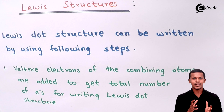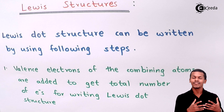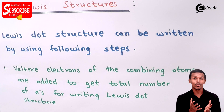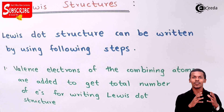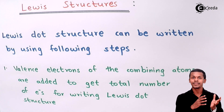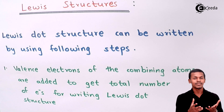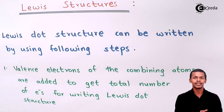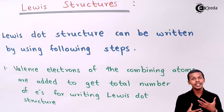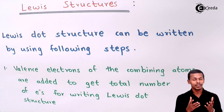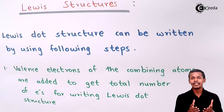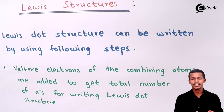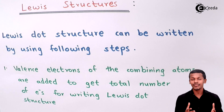Lewis structure is a representation of the atom's valence electrons. Whenever atoms form a molecule, we represent the total number of valence electrons of each particular atom, and that is how we get the overall electrons present in a molecule. Meanwhile, only some or sometimes all the atoms form a bond — only few of the electrons represent the formation of a bond.